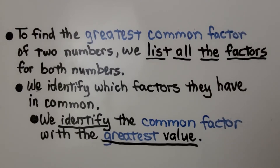To find the greatest common factor of two numbers, we list all the factors for both numbers, identify which factors they have in common — we can circle them — and then identify the common factor with the greatest value.